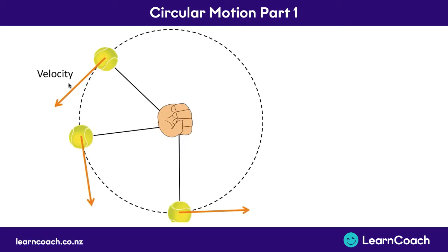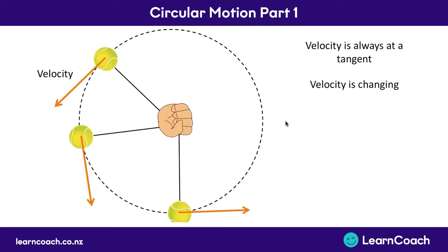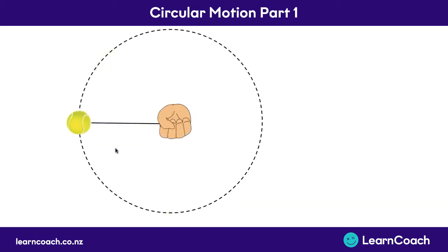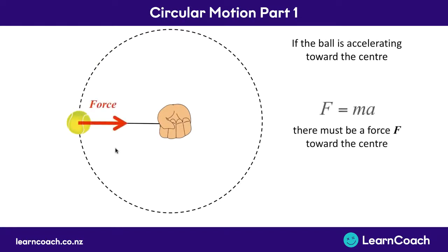You'll also notice that this velocity is constantly changing, and because velocity is changing — because the direction is changing — there must be an acceleration, since a changing velocity over time is an acceleration, and that acceleration acts towards the center. If it has an acceleration it must have a force, from F = ma, and that force also acts towards the center of the circle.